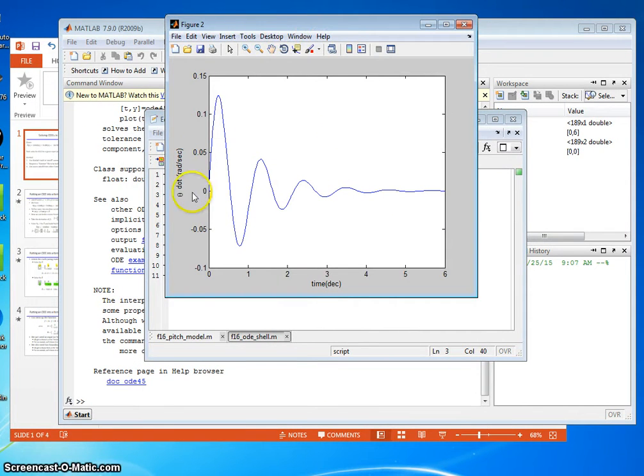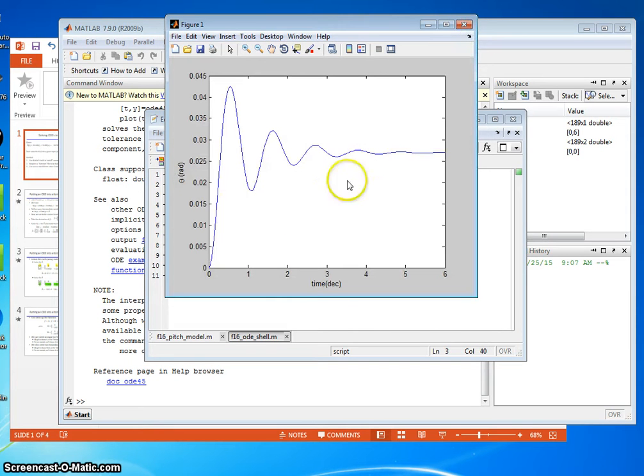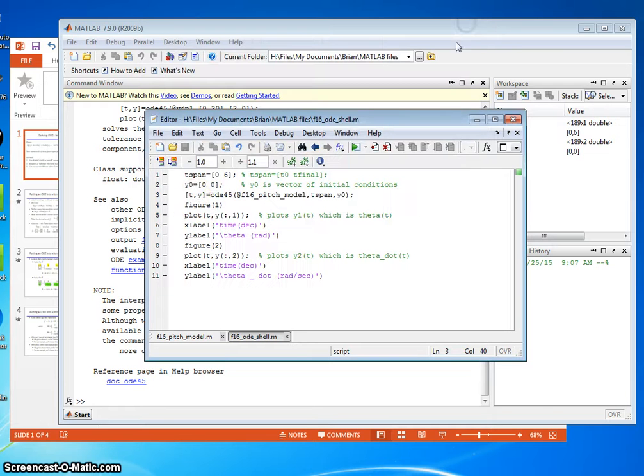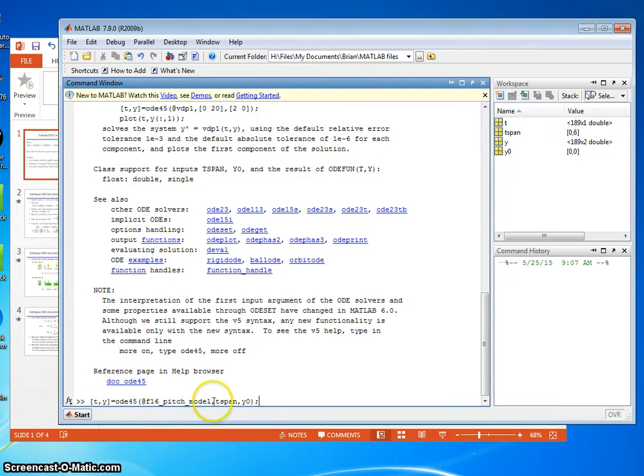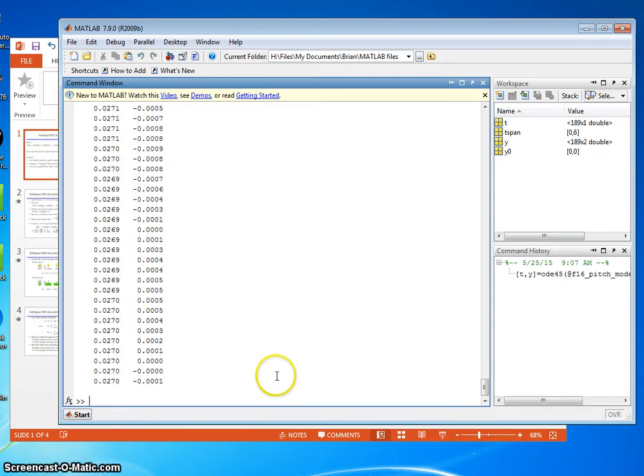Here's figure two, which is θ̇ versus time. Figure one is θ versus time. I could also copy this directly into the command window: put the time span vector directly in here, [0, 6], and the initial condition vector directly in here, and run it.